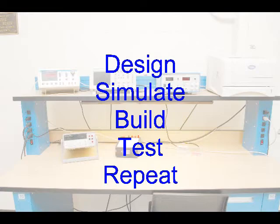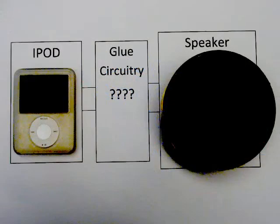This short clip introduces the analog circuit design process in the context of connecting an iPod to speakers that require much more power than the iPod can deliver. The circuitry that glues the iPod to the speakers is an amplifier.